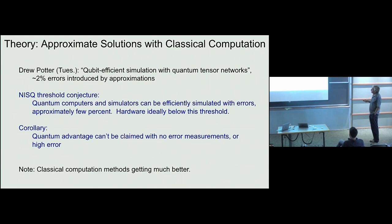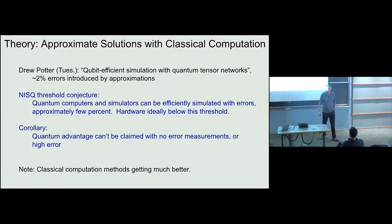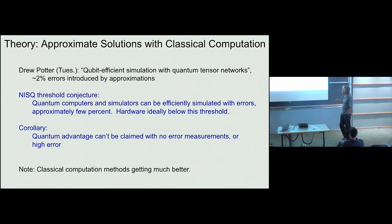A corollary: quantum advantage can't be claimed without error measurements, or with high error rates. I want to know if a quantum computer is really doing something computationally complex. That's a conjecture I'd love to discuss. Classical computation methods are also getting much better over time, so this might be a moving threshold.